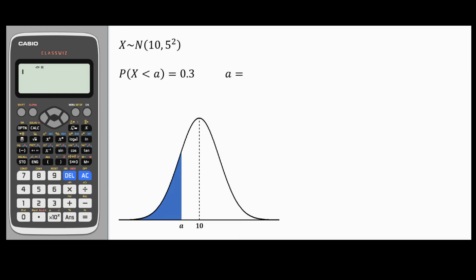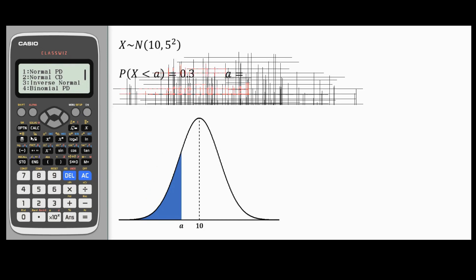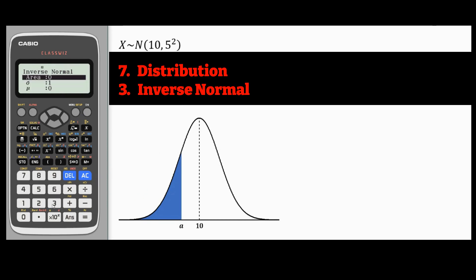You can also use the ClassWiz calculator to find cutoff points given the probability on the left tail of the normal distribution. For example, I know that probability X is less than A is 0.3. I want to find the cutoff point. This time I'll go to menu distribution, which is number 7. But instead of normal CND, I'll go to inverse normal, which is option number 3.